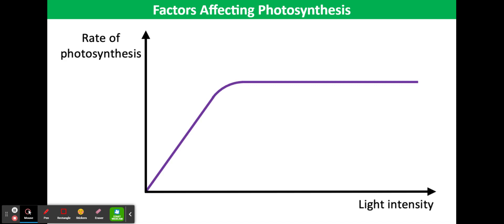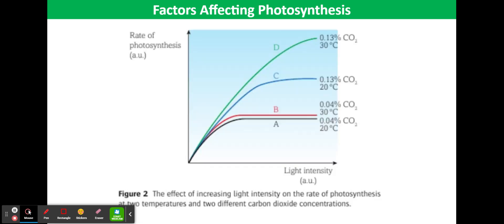Now, a factor other than light intensity is limiting the process. The graph on the slide in front of you shows that where curve A levels out, carbon dioxide concentration limits the process. Where curve C plateaus, temperature is the limiting factor, as shown by curve D.